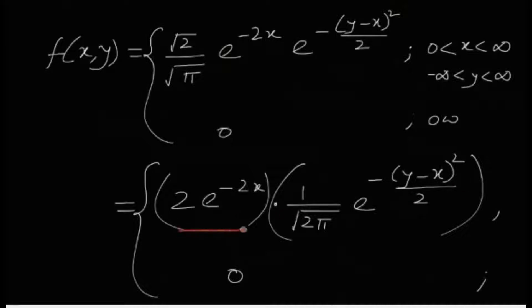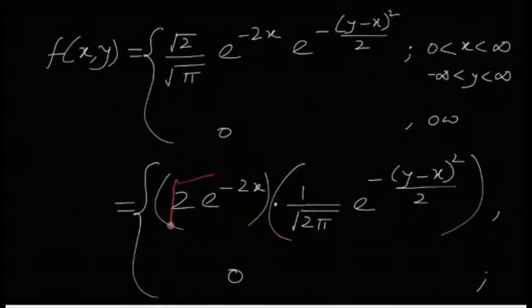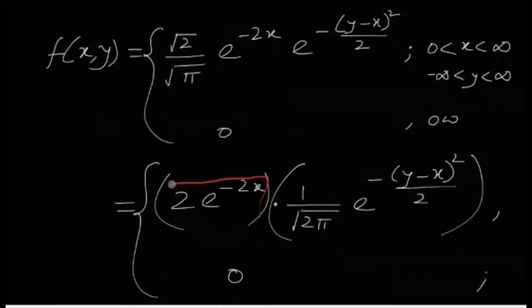Now if you just focus on this part, x tends to be positive. It's a positive random variable and y can take any values. X obviously takes positive values, but y can take any real value. Now this part, if you can notice, this is nothing but the distribution of an exponential distribution. This form is an exponential distribution with mean half. 2 times e to the minus 2x. So if X follows exponential distribution with mean half, then X will have this kind of form. That is the PDF of X.